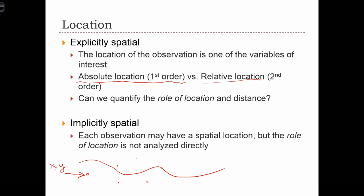So if this is our highway passing through our study area, for each location we might measure the distance of the location to the highway. And for each observation, we're going to have a variable that's called distance to the highway. We use that kind of location information when we're trying to understand the role of location or distance in the process that we're studying using statistics.